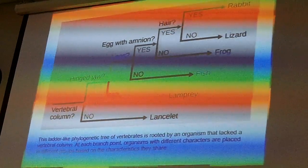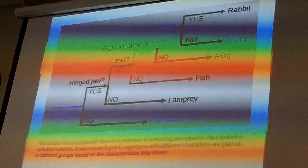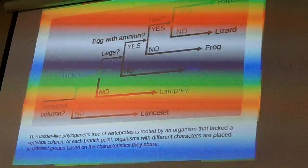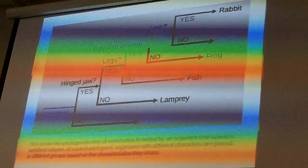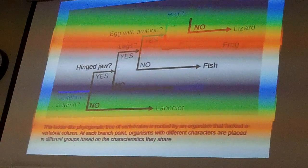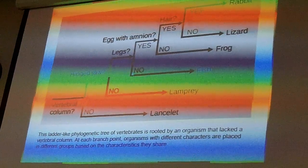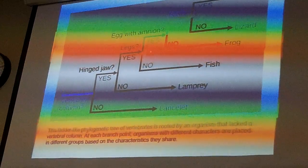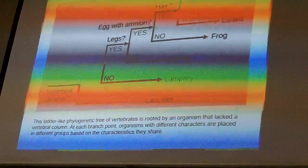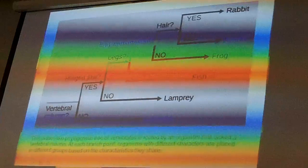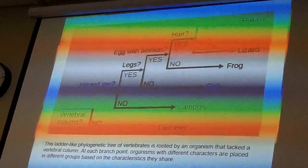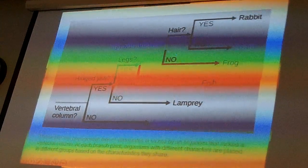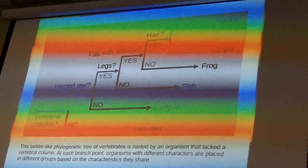Lampreys have a vertebral column but do not have a hinged jaw. Fish don't have legs, but everything above that — frogs, lizards, and rabbits — all have legs.